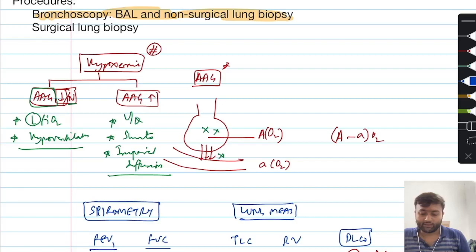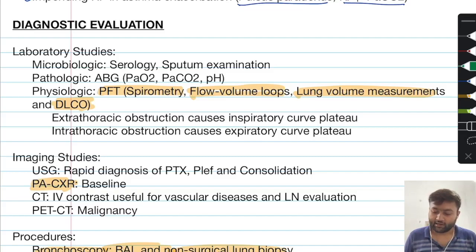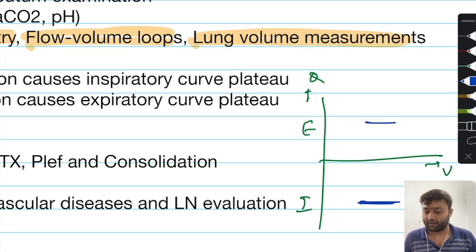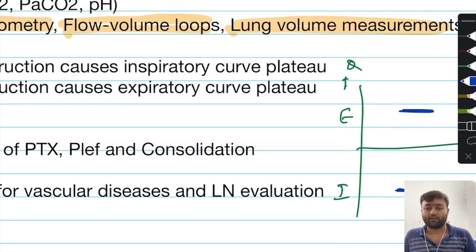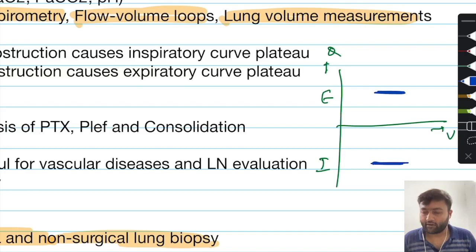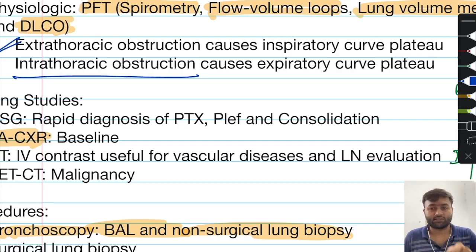This is the basic theory of the approach to the patient with pulmonary disease. One extra point relates to flow-volume loops, which have two components: inspiration and expiration, with flow on one axis and volume on the other. If the inspiratory curve undergoes a plateau, you should think of extrathoracic obstruction. Whereas if the expiratory portion of the curve undergoes a plateau, you should think of intrathoracic obstruction. I hope you will read the book. Thank you.